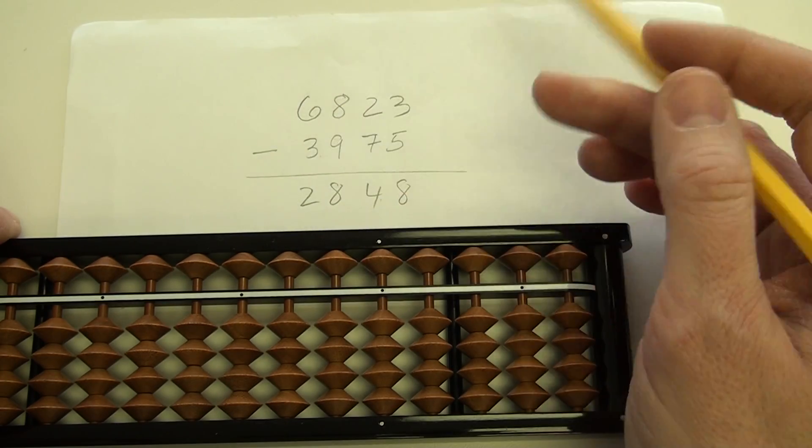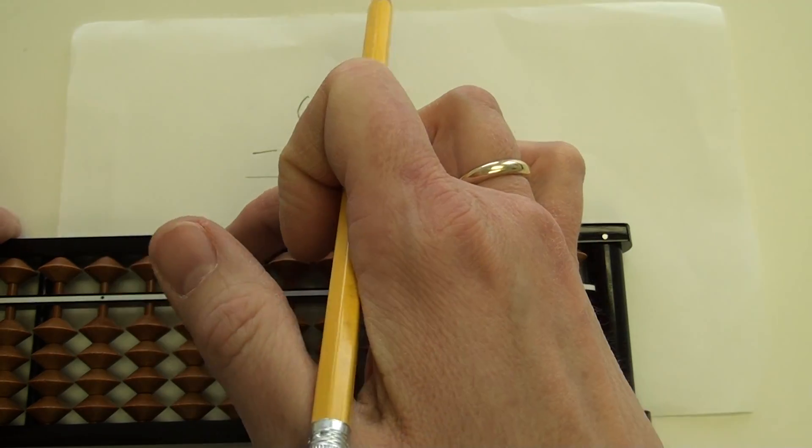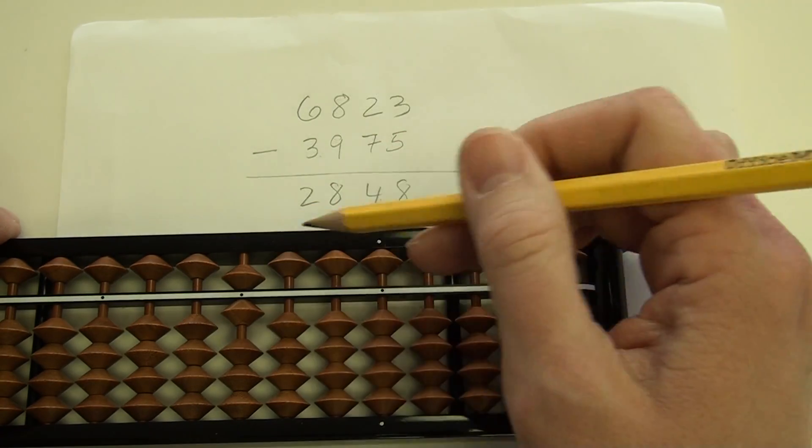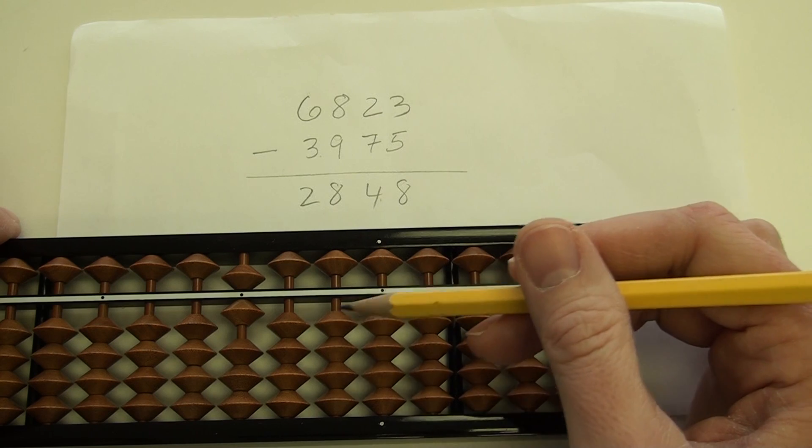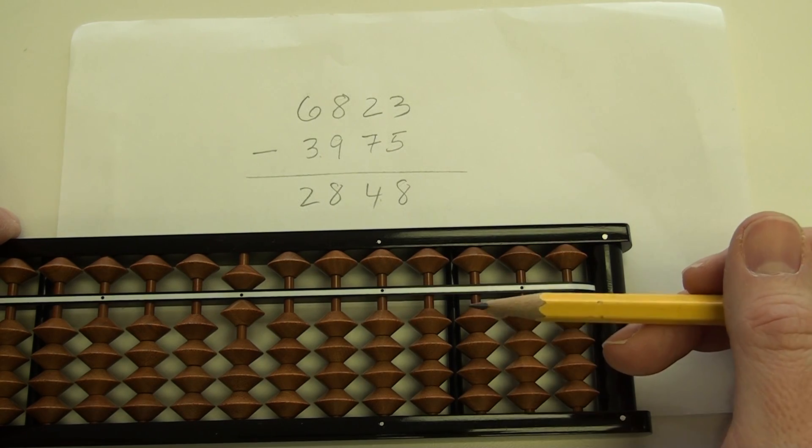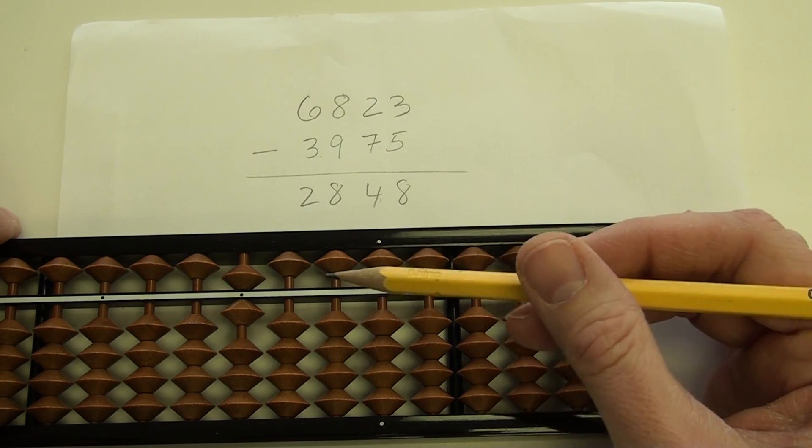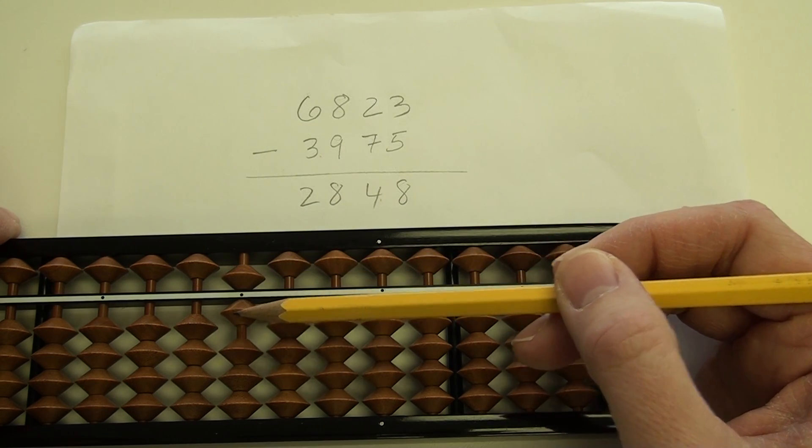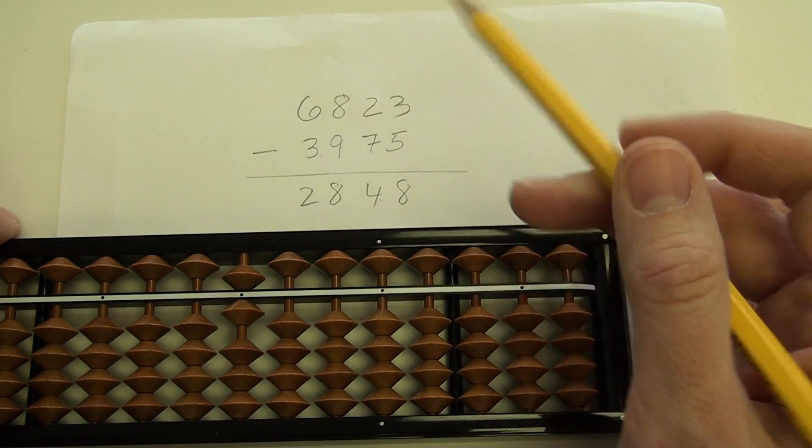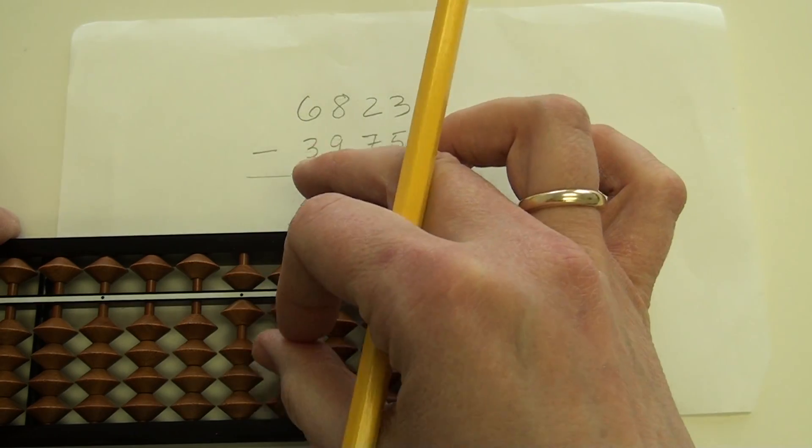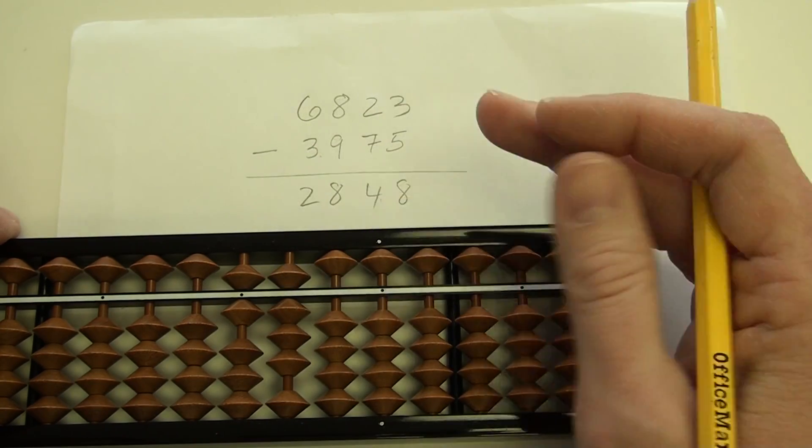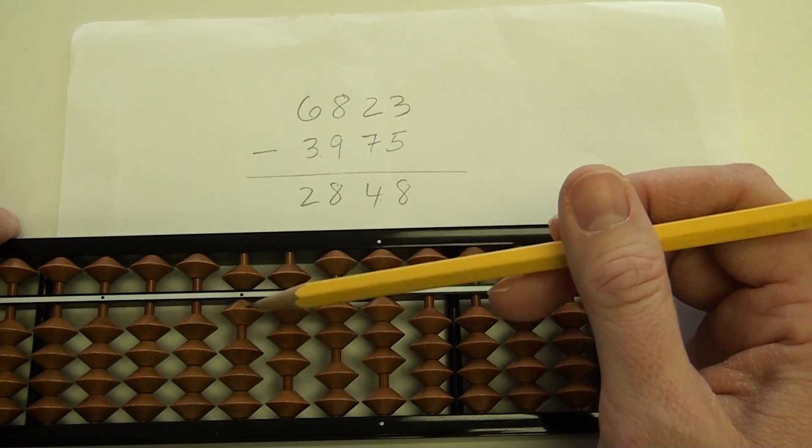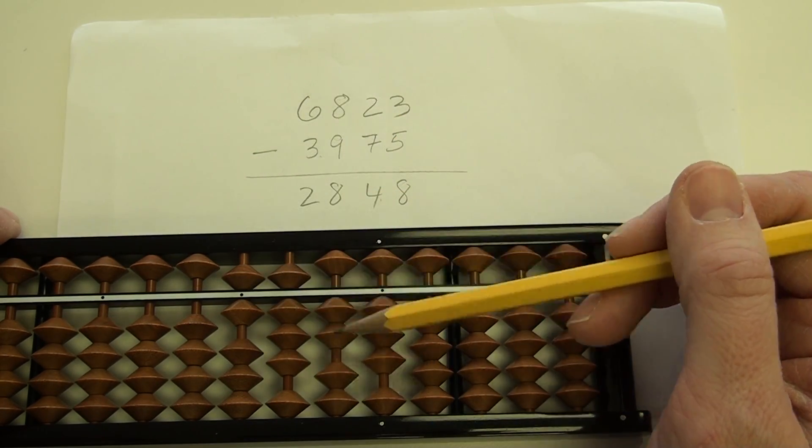So 6,000 would be a 5 plus 1. Remember, all the heavenly beads are worth 5. All the earthly beads, the ones below the bar, they are 1. So 6,000 is 5,000 plus 1,000. Then we need the 8. 8 is 5 plus 3. We need 2 here, so that's just 2 tens, and then 3 ones. So we have here 6,823.